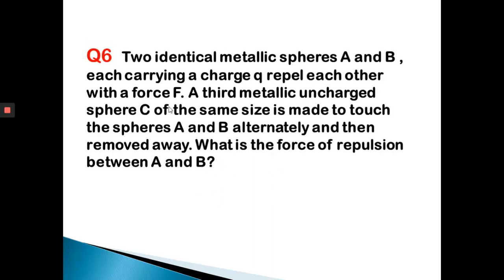Question 6: Two identical metallic spheres A and B, each carrying a charge Q, repel each other with a force F. A third metallic uncharged sphere C of the same size is made to touch the spheres A and B alternately and then removed. What is the force of repulsion between A and B? Please try to pause the video and solve this yourself. So A and B each have charge Q and repel each other. C first touches A and then touches B.